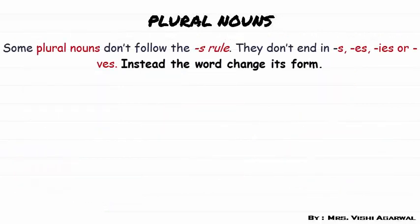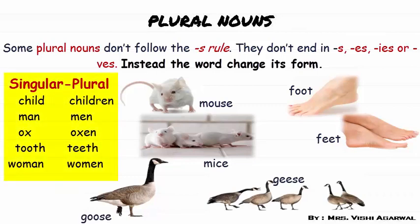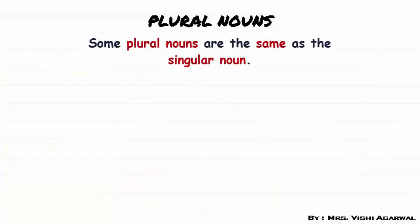But there are some plural nouns that don't follow the S rule. They don't end in S, ES, IES, or VES. They change like: mouse to mice, foot to feet, goose to geese, child to children, man to men, ox to oxen, tooth to teeth, woman to women.